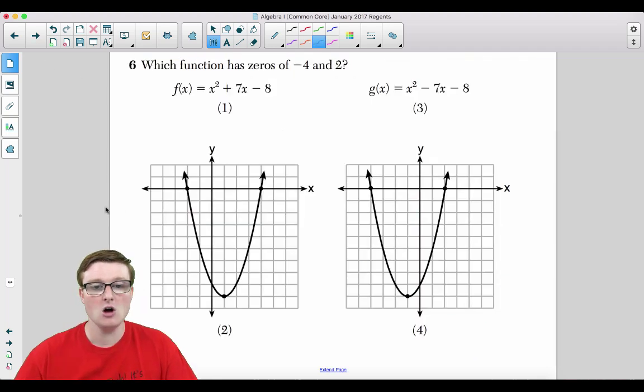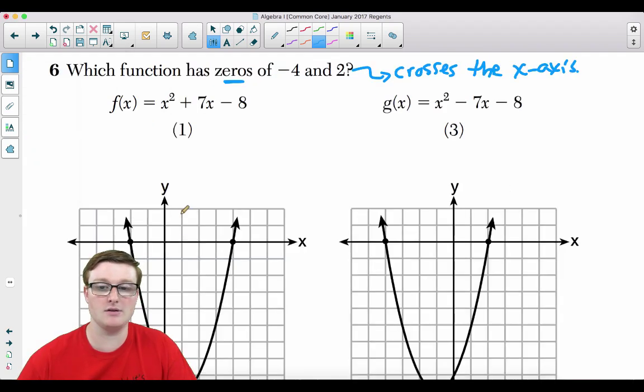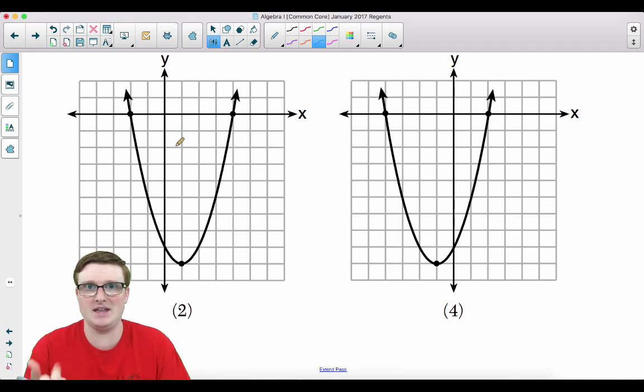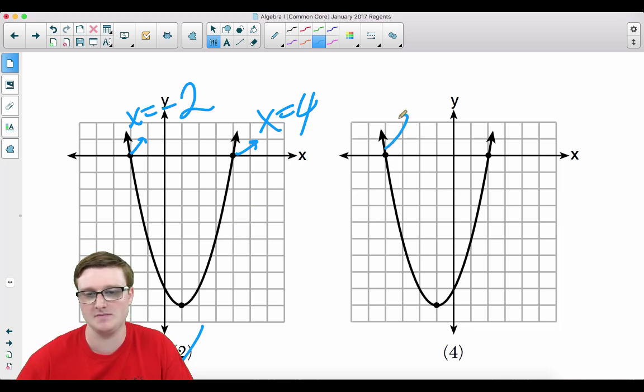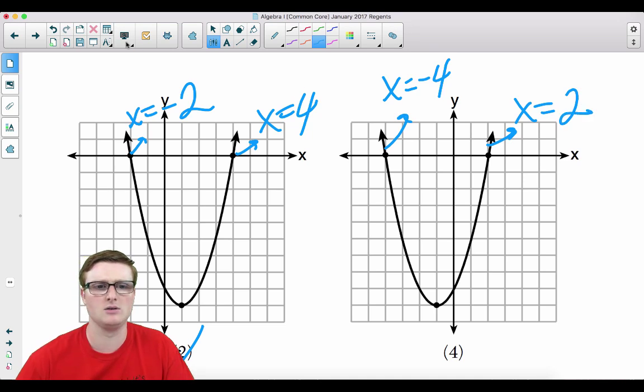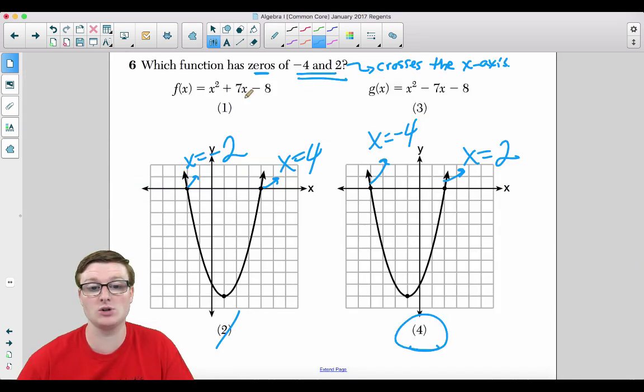Number 6. Which function has the zeros negative 4 and 2? When it says zeros, that means that it crosses the x-axis at these points. These are the values where it crosses the x-axis. Just because they have these equations and these graphs, let's take a look at the graphs first. Maybe the graph is the answer immediately. It says zeros of negative 4 and 2. This shows right here, this shows x equals negative 2. This is showing x equals positive 4. It's showing its opposites. Choice 2 makes no sense. This is showing x equals negative 4, and this is showing x equals 2. That's your answer. Choice 4. Those are the zeros of negative 4 and 2. We didn't even have to do choices 1 and 3 because they're wrong anyway.